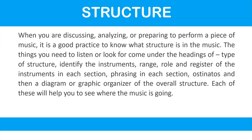When you are discussing, analysing or preparing to perform a piece of music, it is good practice to know the structure. The things to listen or look for come under the headings of: type of structure, identifying the instruments, range, role and register of the instruments in each section, phrasing in each section, ostinatos, and then a diagram or graphic organiser of the overall structure. Each of these will help you see where the music is going.